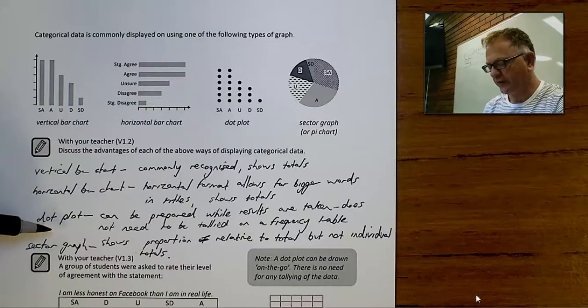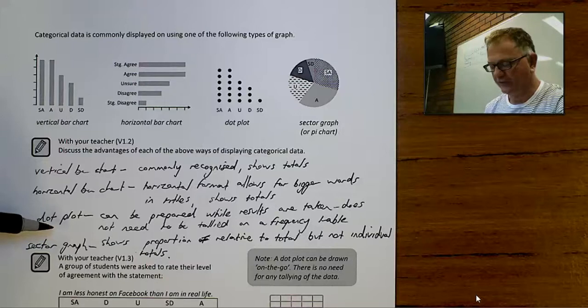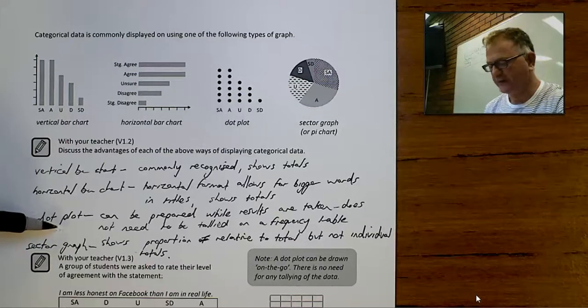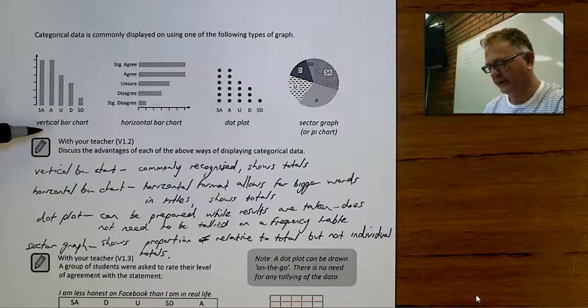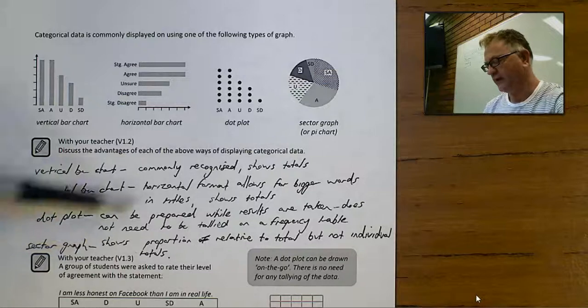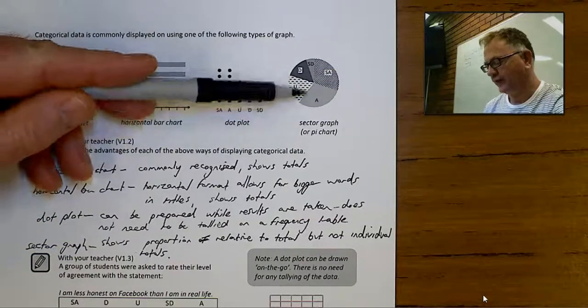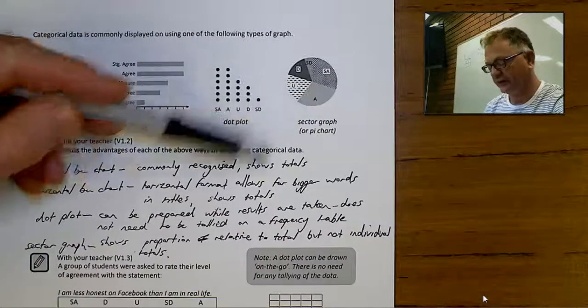It shows the different totals as a proportion of the whole. Now you don't really get that with any of the others. You can see roughly what percentage of people agreed with the statement.